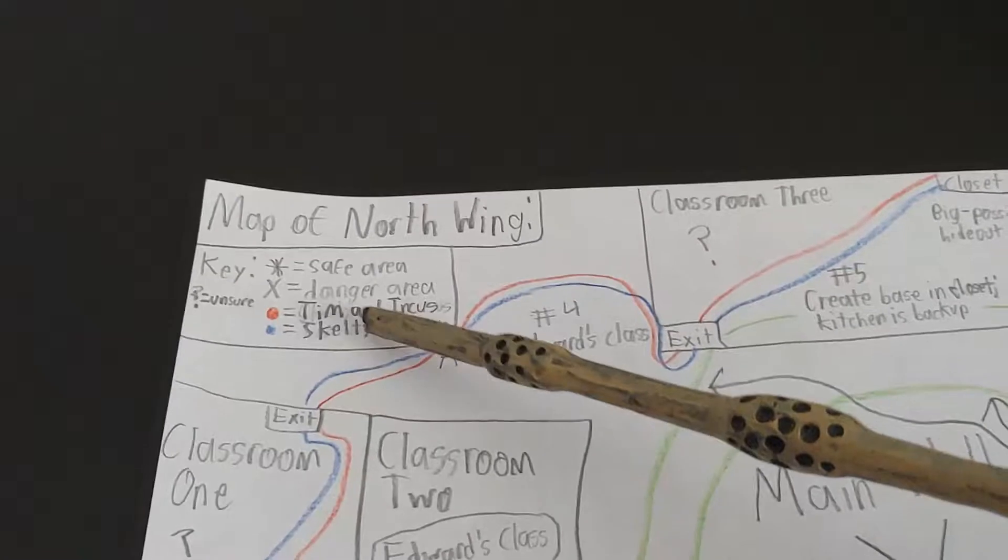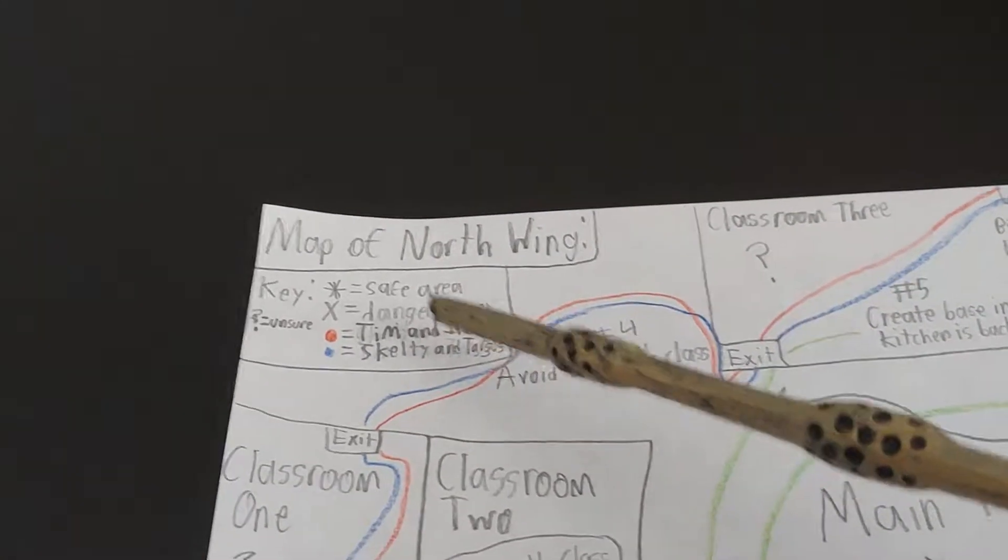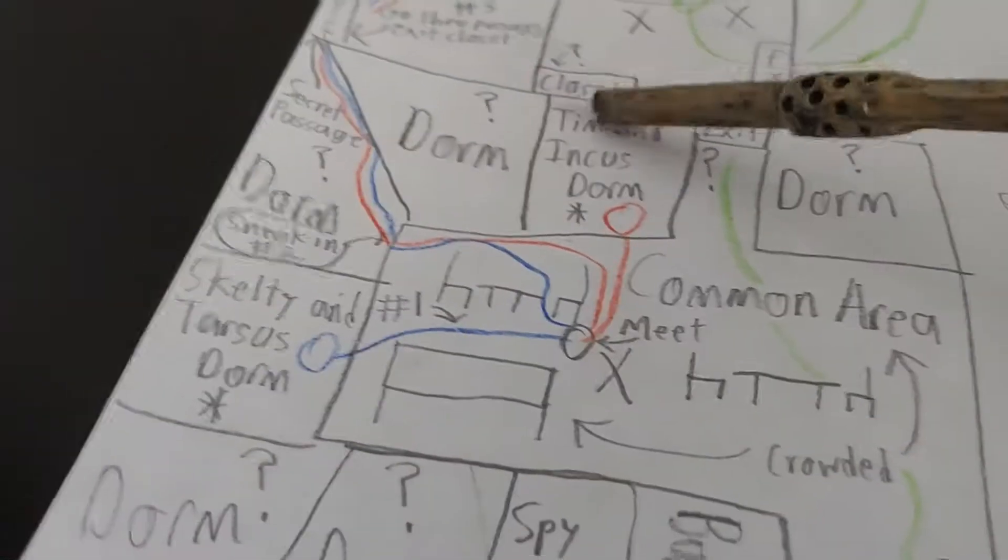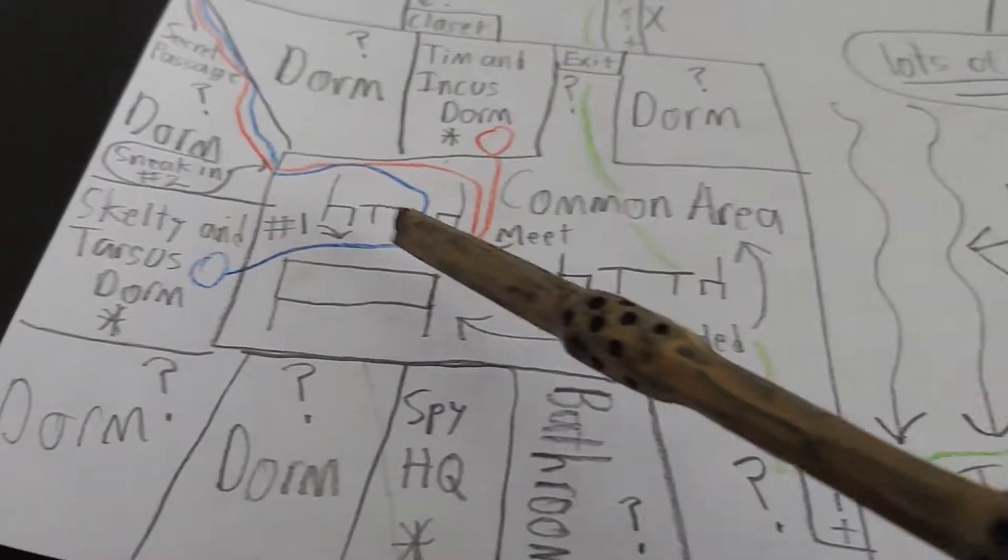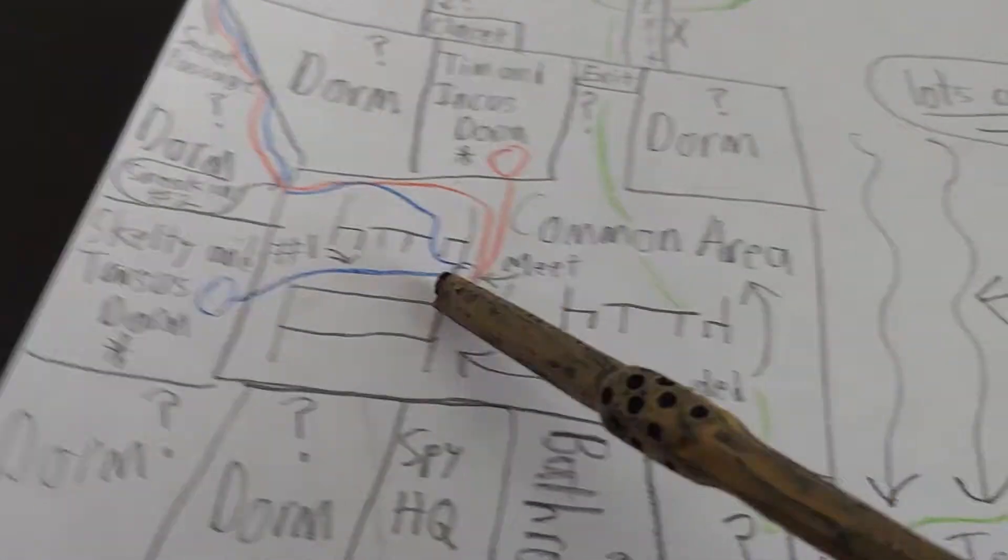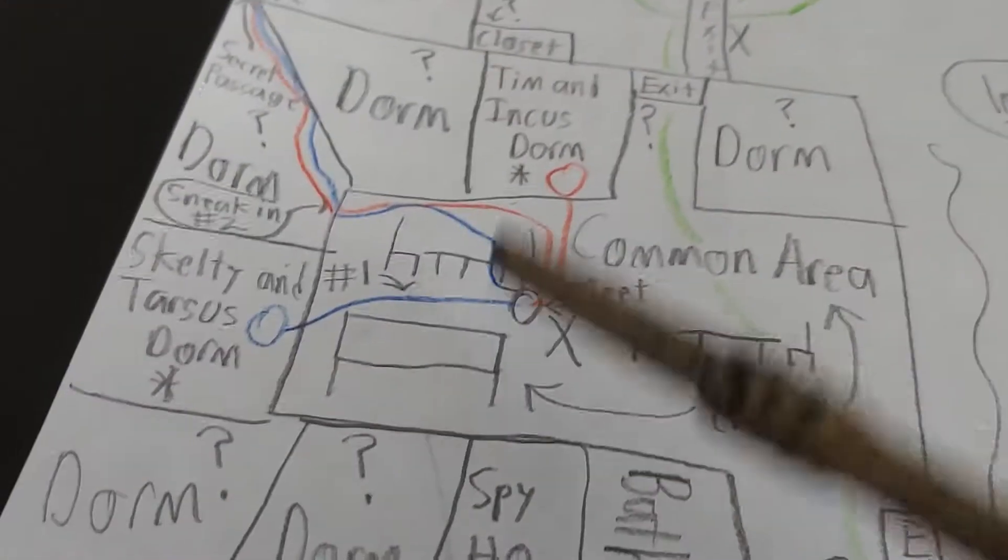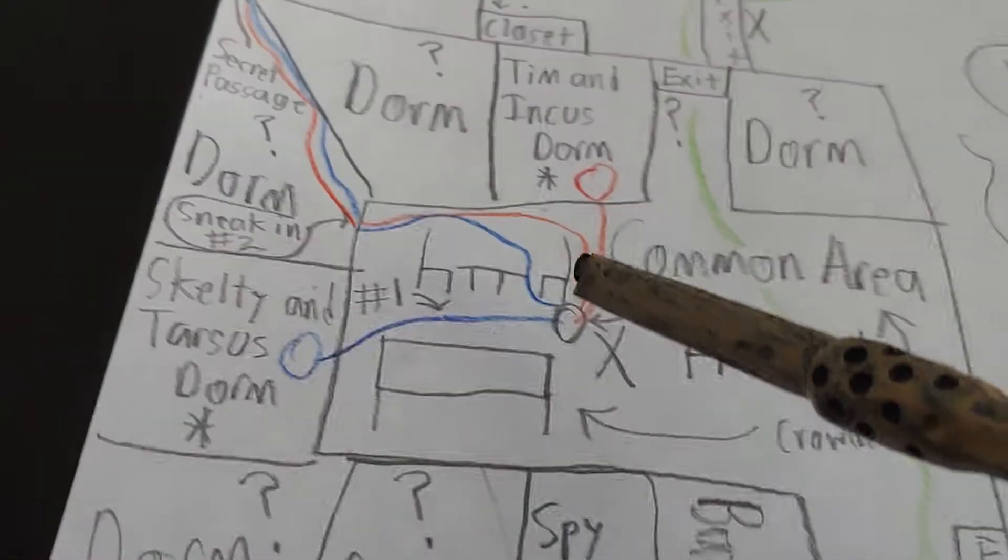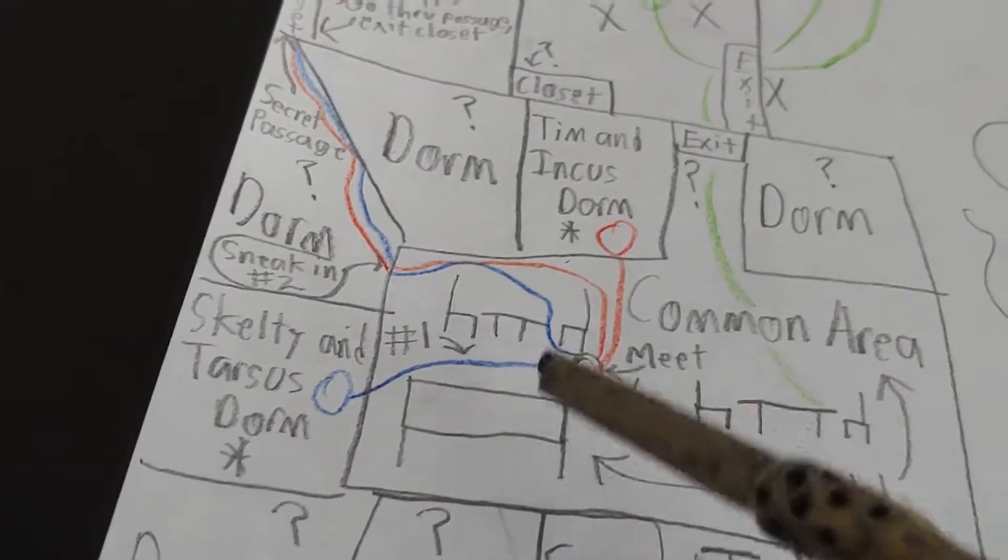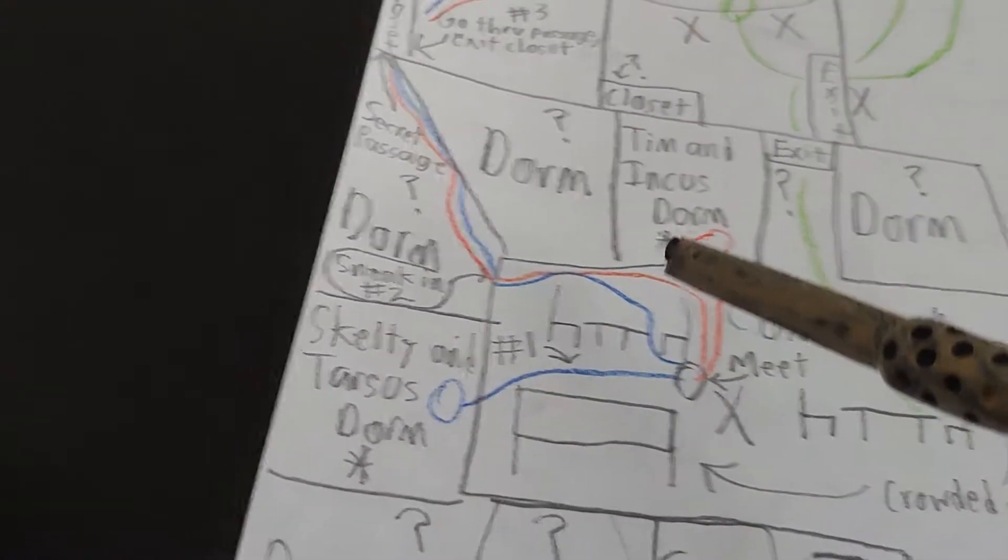Now let's look at the plan. The red line stands for Tim and Incus, and the blue line stands for me and Tarsus. Tim and Incus will come out of their dorm, and Tarsus and I will come out of our dorm, and we'll meet in the common area. That's step one. In the common area, we have to plan accordingly at the right time based on what Edward the train is doing.